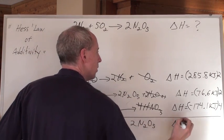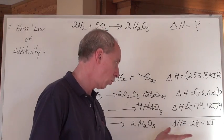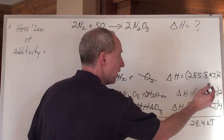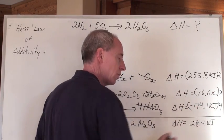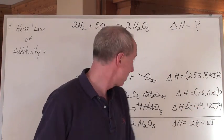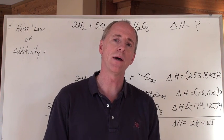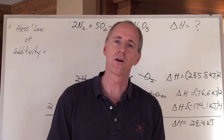So the delta H equals 28.4 kilojoules. One number after decimal. One number after decimal. One number after decimal. Keep one number after the decimal. It's nice, hey? So just follow those rules about canceling out those compounds. Leave the elements till the very end. And it works out great.